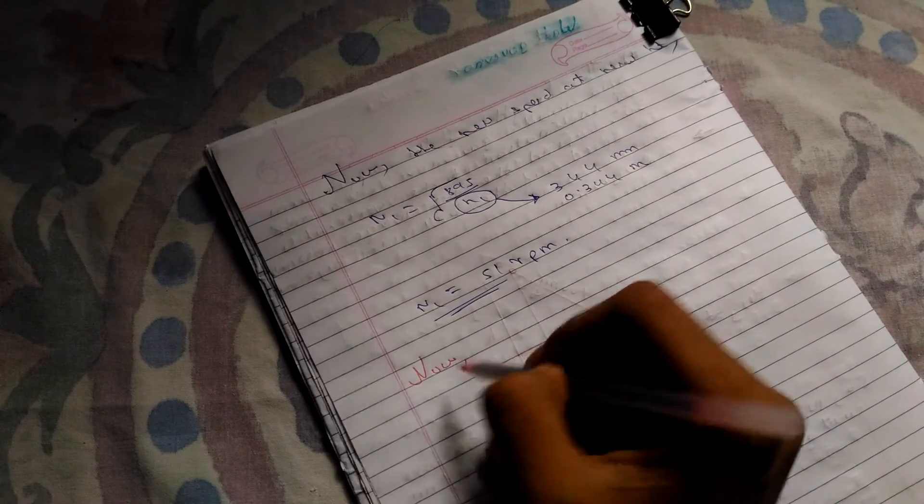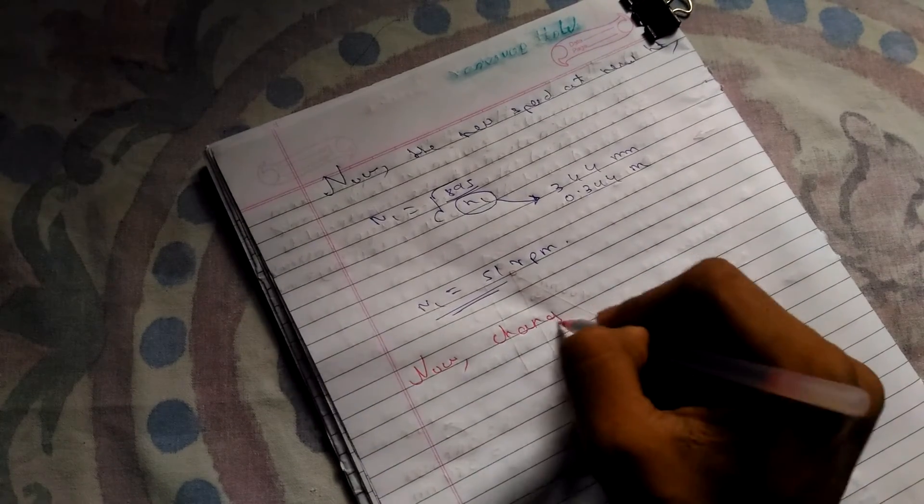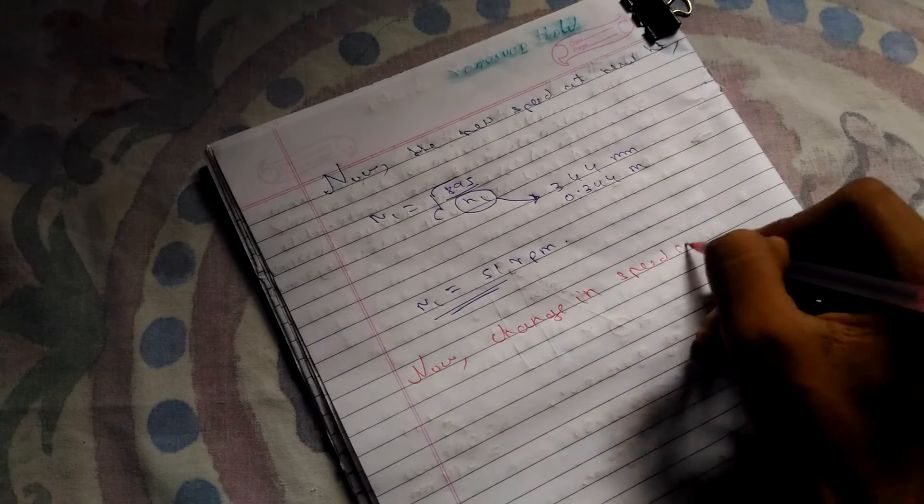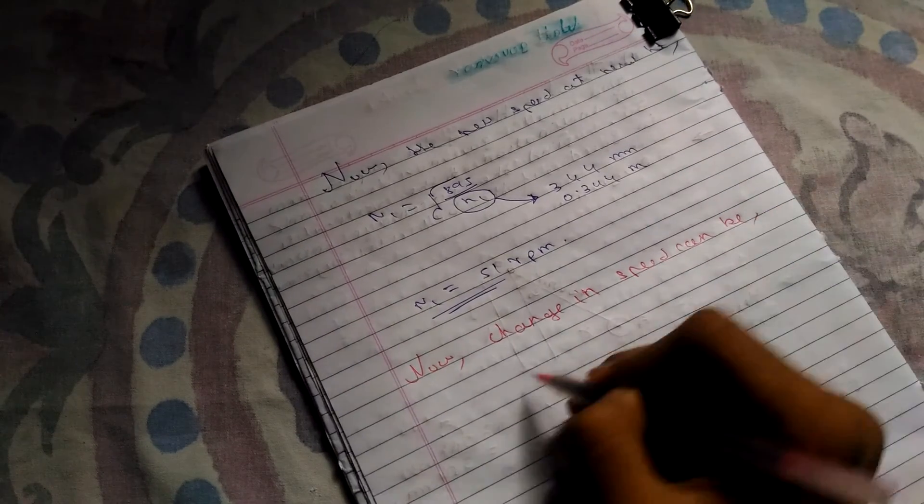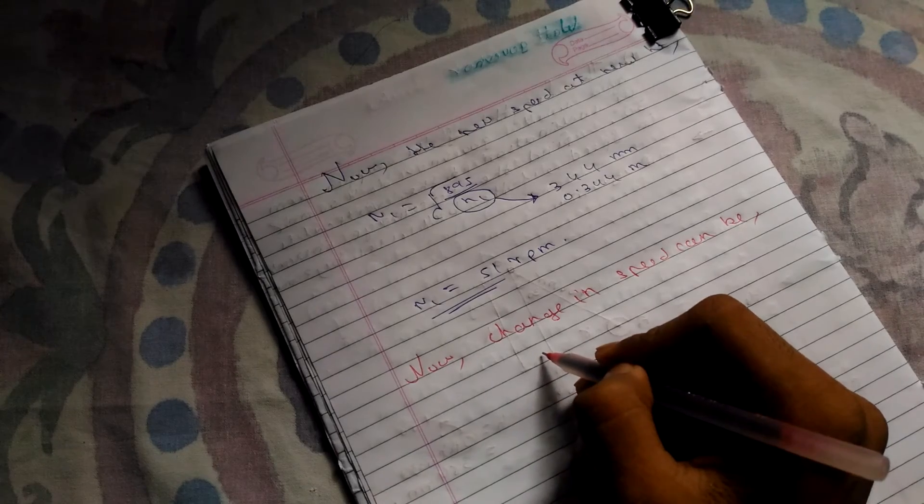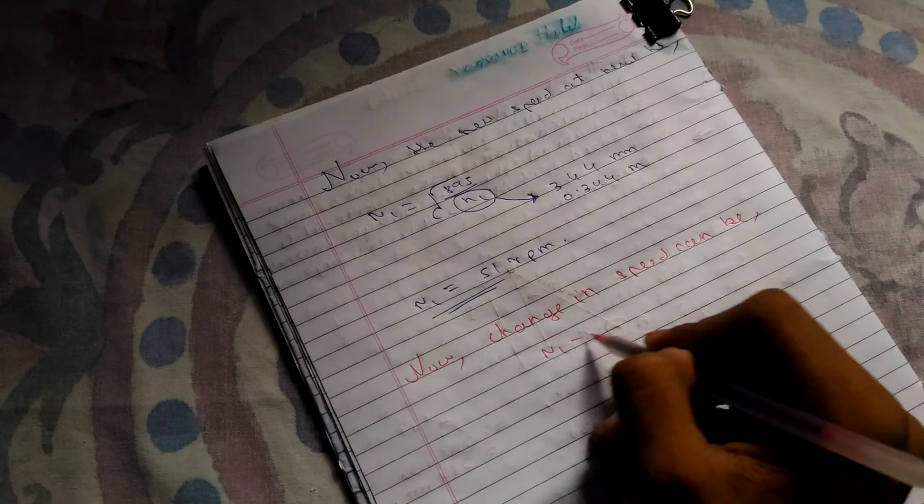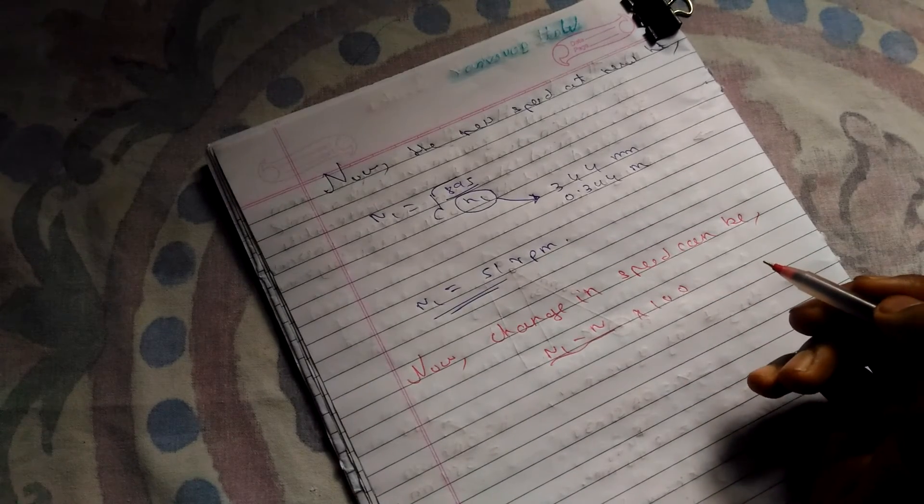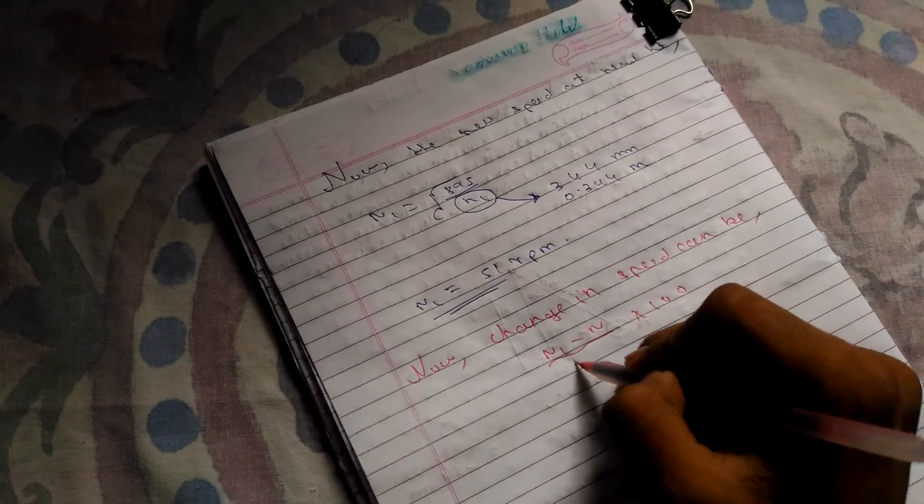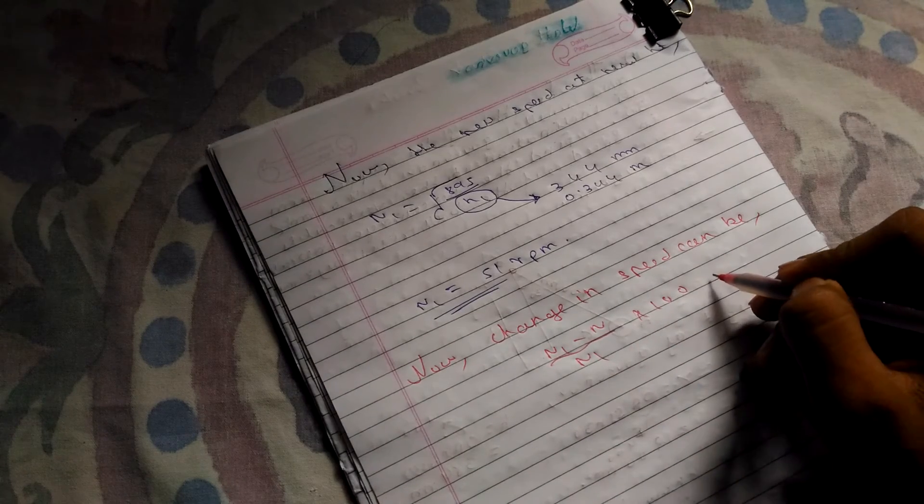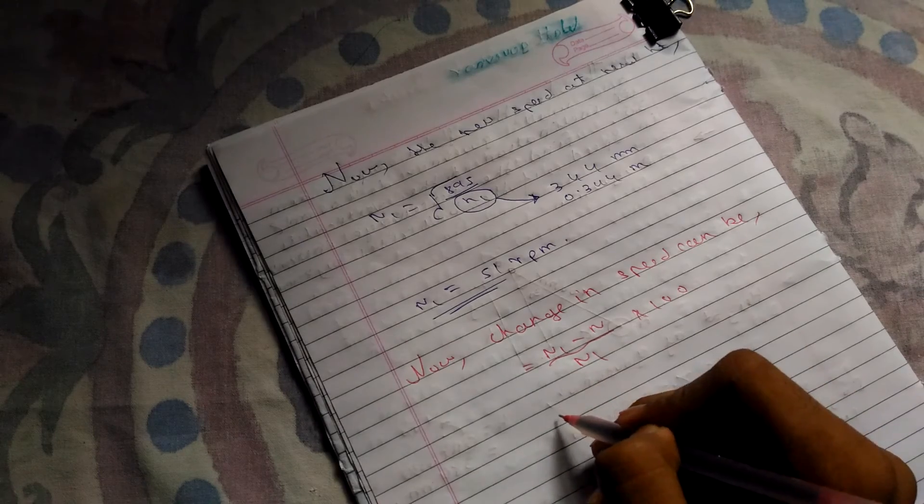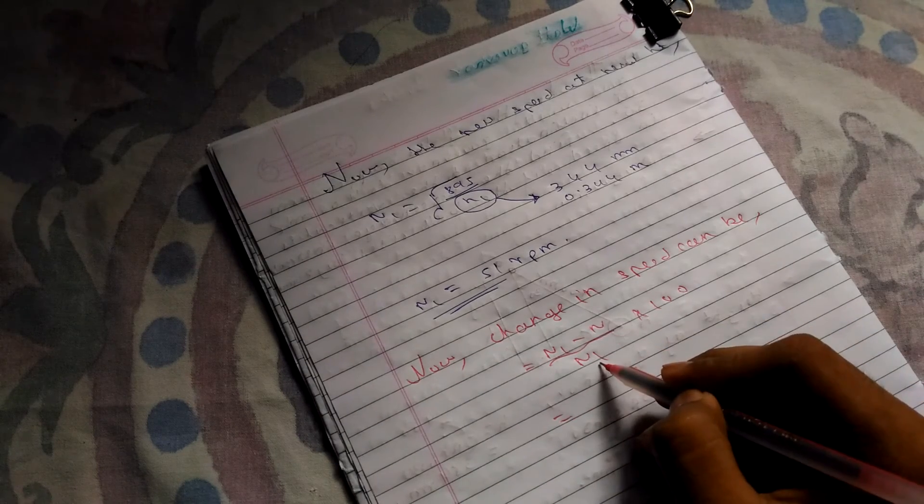The percentage change in speed is N1 minus N initial times 100 upon N1. That is N1 minus N upon N1.